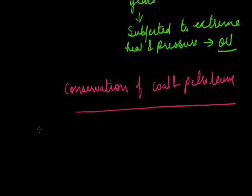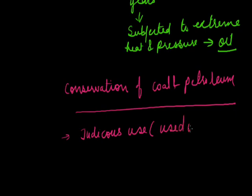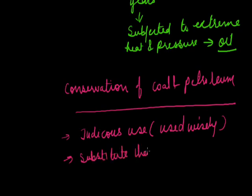We can conserve coal and petroleum by their judicious use — judicious use means wise use. They should be used wisely and not wasted, and substituted by other resources wherever feasible. We can also substitute them with other resources. Conservation of coal and petroleum is a joint responsibility of industries, citizens and government, where each one has a significant role in the management of natural resources.